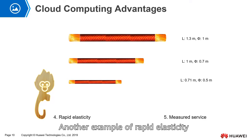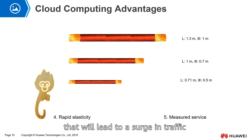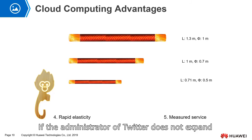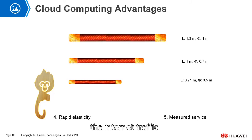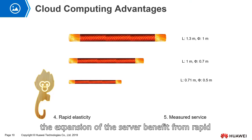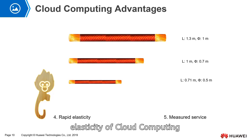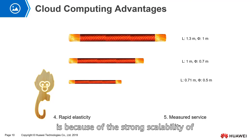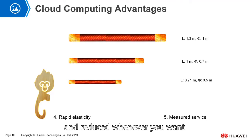Another example of rapid elasticity is a news explosion on Twitter. That will lead to a surge in traffic. If the administrator of Twitter does not expand the server's internet traffic capacity, it will cause the server to crash. In this case, the expansion of the server benefits from the rapid elasticity of cloud computing, which can be expanded and reduced whenever you want.